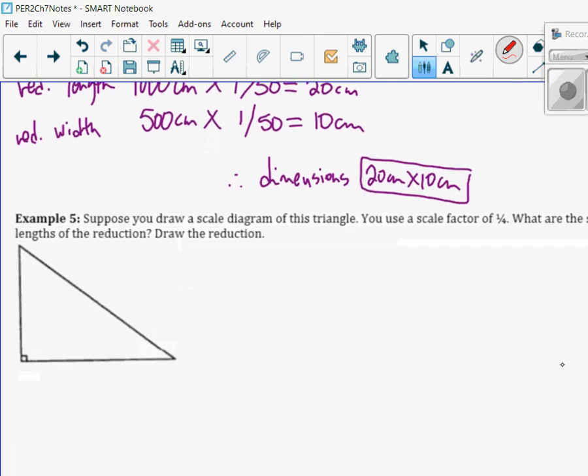Suppose you draw a scale diagram of this triangle. You use a scale factor of 1/4. What are the lengths of the reduction? I have to first measure this. I get 3.4 centimeters when I measure it with a ruler. And this is 4.7 centimeters. So if I take my height, we're going to call this a height, and this is the base.